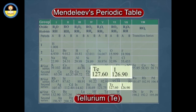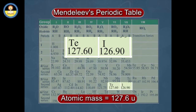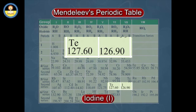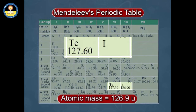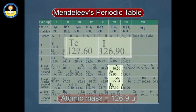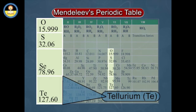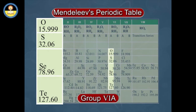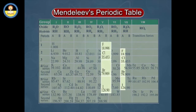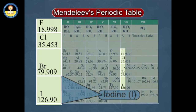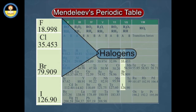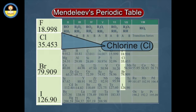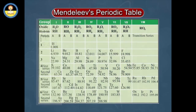Similarly, tellurium (Te) with higher atomic mass 127.6 unified mass was placed before iodine (I) with lower atomic mass equal to 126.9 unified mass, since the properties of tellurium were similar to those of oxygen, sulphur, and selenium of group 6A, while the properties of iodine were similar to halogens — fluorine, chlorine, and bromine of group 7A.